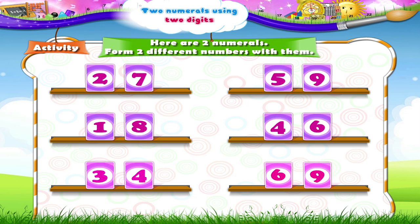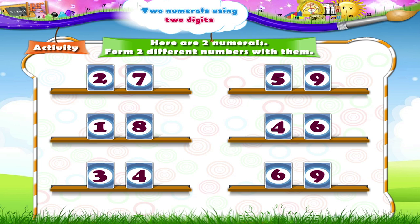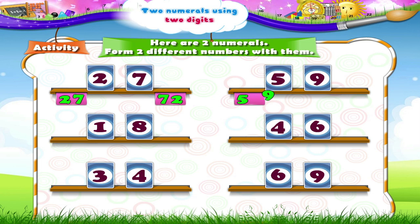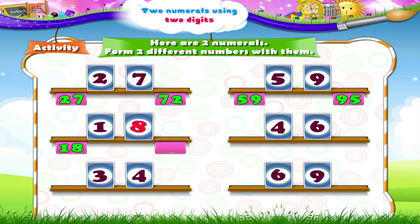Here are two numerals. We have to form two different numbers with them. Let's begin. Two and seven: the numbers formed are twenty-seven and seventy-two. Five and nine: the numbers are fifty-nine and ninety-five. One and eight: the numbers are eighteen and eighty-one.